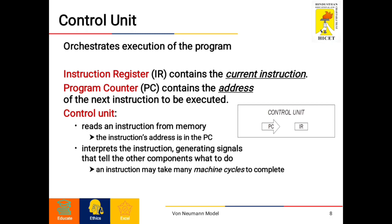The control unit orchestrates execution of the program. A control unit (CU) handles all processor control signals. It directs all input and output flow, fetches code for instructions, and controls how data moves around the system. The instruction register (IR) contains the current instruction, and the program counter (PC) contains the address of the next instruction to be executed. The control unit reads an instruction from memory, then interprets the instruction, generating signals that tell the other components what to do. The control unit consists of two devices: PC (program counter) and IR (instruction register).